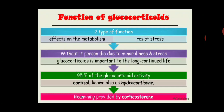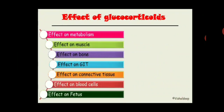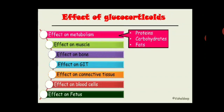Now let's discuss the effects of glucocorticoid in detail. The headings are: effect on metabolism, effect on muscle, effect on bone, on GIT, on connective tissue, on blood cells, and on fetus. If glucocorticoid is asked as a long question in an exam, you need to write down the effect of glucocorticoid on all these tissues. As far as metabolism is concerned, the three most important are protein, carbohydrate, and fat.